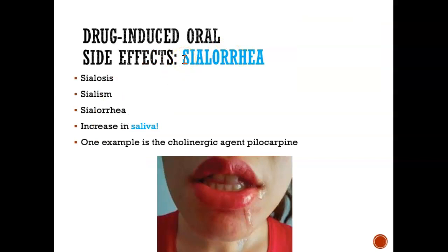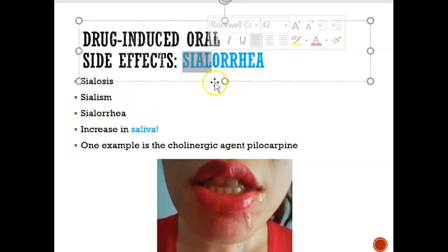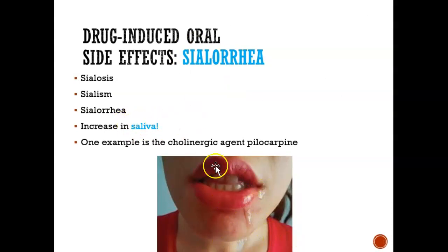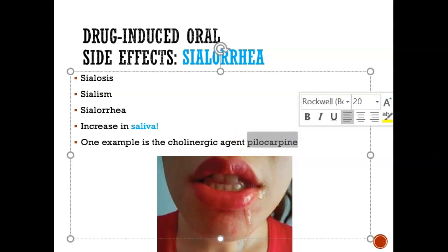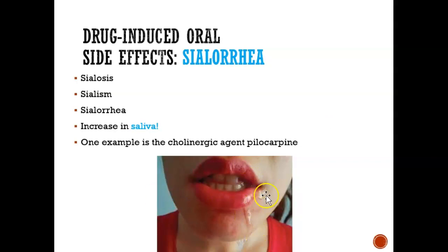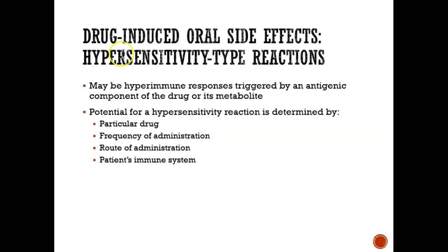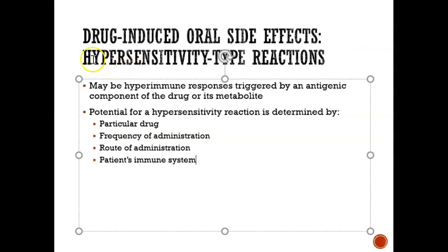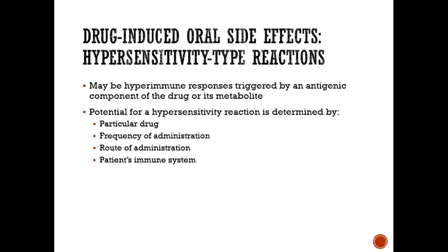Sialorrhea, also known as sialosis or sialism, refers to an increase in saliva — there's more saliva in their mouth. Why would someone get that? Maybe they're on pilocarpine, which causes a lot of saliva production. When anyone is taking a drug, we need to be mindful of looking for lesions inside their mouth, because it can cause a lot of hypersensitivity reactions. People could be extremely sensitive to the drug and it appears in their mouth.